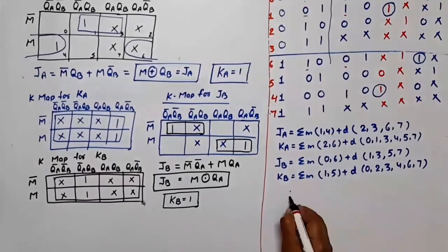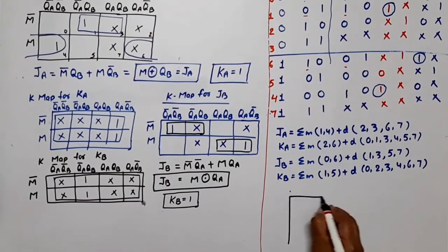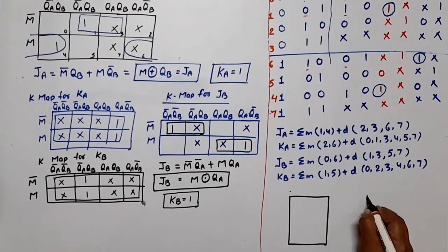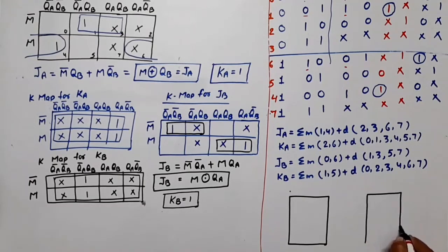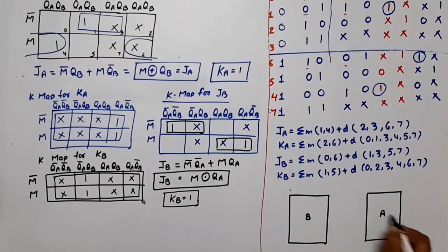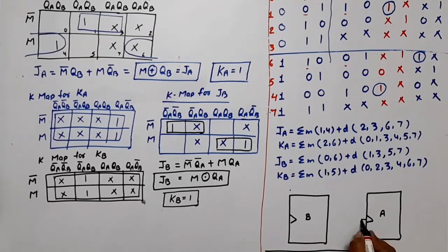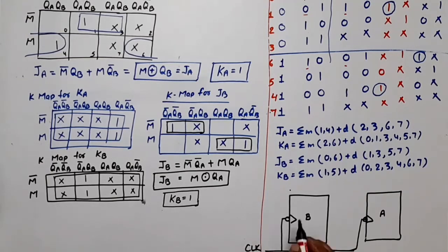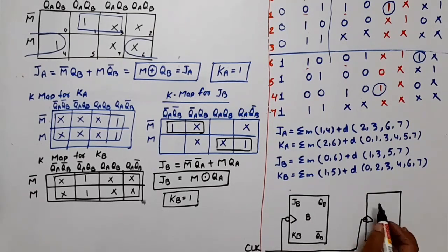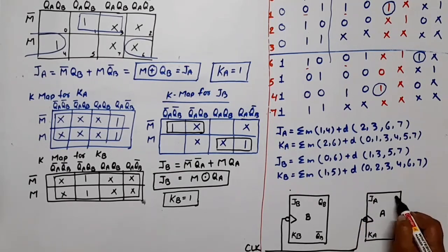Now let's draw the logic diagram. This is a synchronous counter, so we need two JK flip-flops — flip-flop B and flip-flop A. The clock will be the same for both flip-flops; the bubbles indicate a negative clock pulse is applied. The flip-flop outputs are JB, KB, QB, QB bar for flip-flop B, and JA, KA, QA, QA bar for flip-flop A.